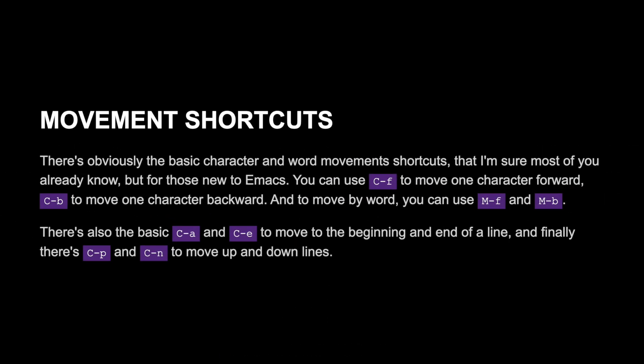Movement shortcuts. There's obviously the basic character and word movement shortcuts that most of you already know, but for those new to Emacs: you can use Ctrl+F to move one character forward, Ctrl+B to move one character backward, and to move by word you can use Meta+F and Meta+B. There's also Ctrl+A and Ctrl+E to move to the beginning and end of a line, and Ctrl+P and Ctrl+N to move up and down lines.